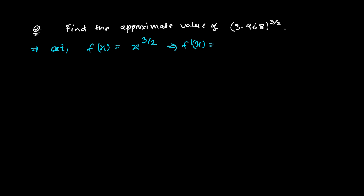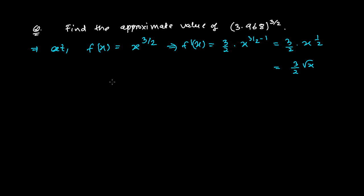The next step is to find the derivative of that function. The derivative of x to the power 3/2 is (3/2) times x to the power (3/2 − 1), which gives (3/2) times x to the power 1/2, so finally f'(x) = (3/2)√x.